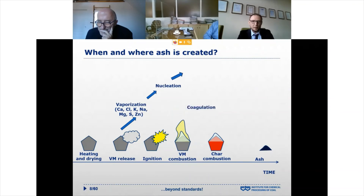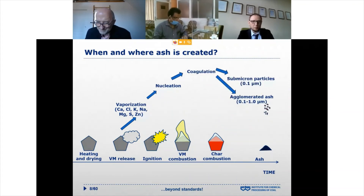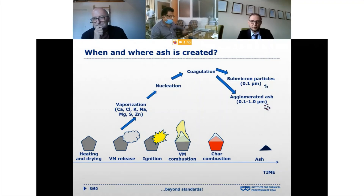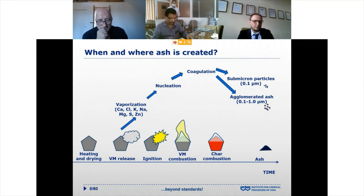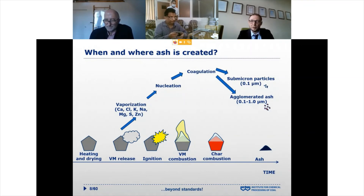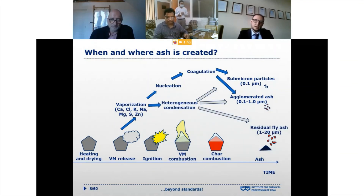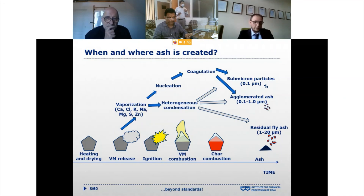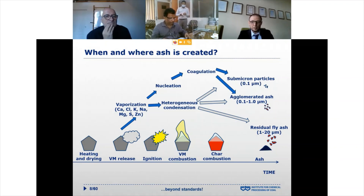Especially during volatile release, ignition, and combustion, compounds like sodium, potassium, and calcium can be released as a gaseous phase. They can then condense, forming sub-micron particles, and agglomerated ash is created. During this process, ash can also be formed via heterogeneous condensation — meaning the gaseous phase or even aerosol liquid phase can condense on the surfaces of ash particles or on boiler wall surfaces.